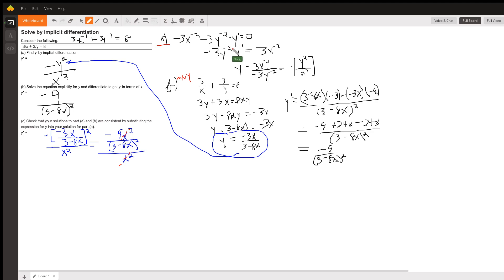And then I solve for y prime by adding 3x to the minus 2 to both sides of the equation and then dividing by negative 3y to the minus 2. 3 over negative 3 is negative 1. And to make the exponents positive, I write it as y squared over x squared.